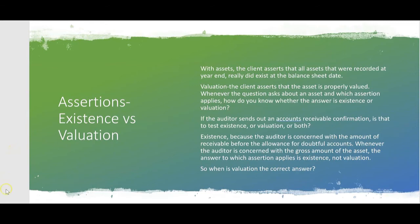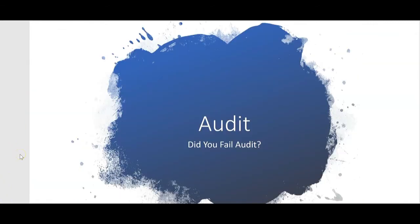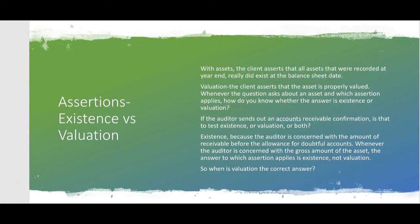In this video, we said if you failed audit, it's probably because you don't know the difference between completeness and existence occurrence. There are other assertions you have to know too. In the next audit video, we're going to go over the difference between existence and valuation — the existence assertion versus the valuation assertion. So we just played the existence versus completeness game; now we're going to play existence versus valuation in the next audit video.